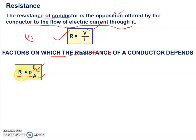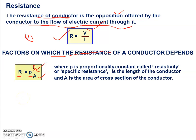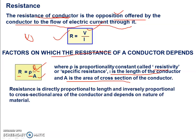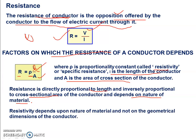जिस material की resistivity ज्यादा होगी उसका resistance ज्यादा होगा। For example, copper की resistivity काफी कम होती है, इसलिए electric wires copper की बनाई जाती हैं। लेकिन diamond का resistance बहुत ज्यादा होता है क्योंकि diamond की resistivity ज्यादा होती है। So: resistance is directly proportional to length, inversely proportional to cross-sectional area, and depends on the nature of material, which is resistivity. Resistivity is independent of geometrical dimensions of the conductor.